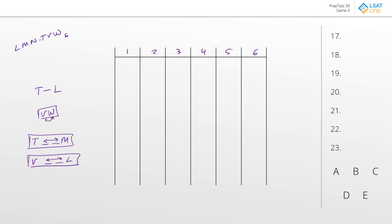Since all of these restrictions are reversible, it's hard to put anything more permanent on the board. Let's jump straight into the questions. Question 17 asks for a complete acceptable ordering. As usual, we check by the rules. First rule — T before L — so answer A looks good, B does not (L is before T), so we eliminate B. C, D, and E look good so far.